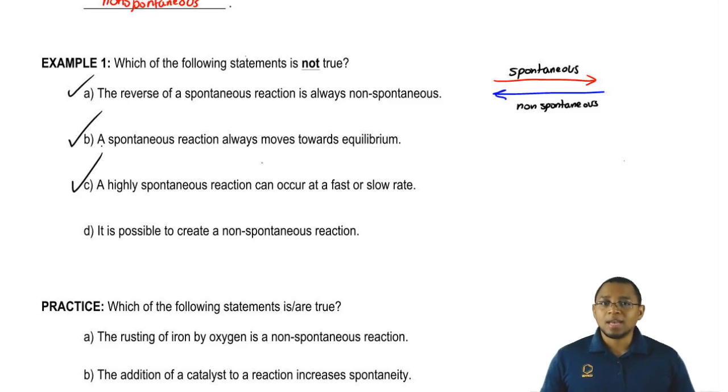So this leaves us with our last choice. Here it says it is possible to create a non-spontaneous reaction. This might seem weird but non-spontaneous reactions are again unnatural. They do not occur. We can supply constant energy to something but once you take away that energy source, the reaction is going to cease. It's going to stop. It's not going to continue.